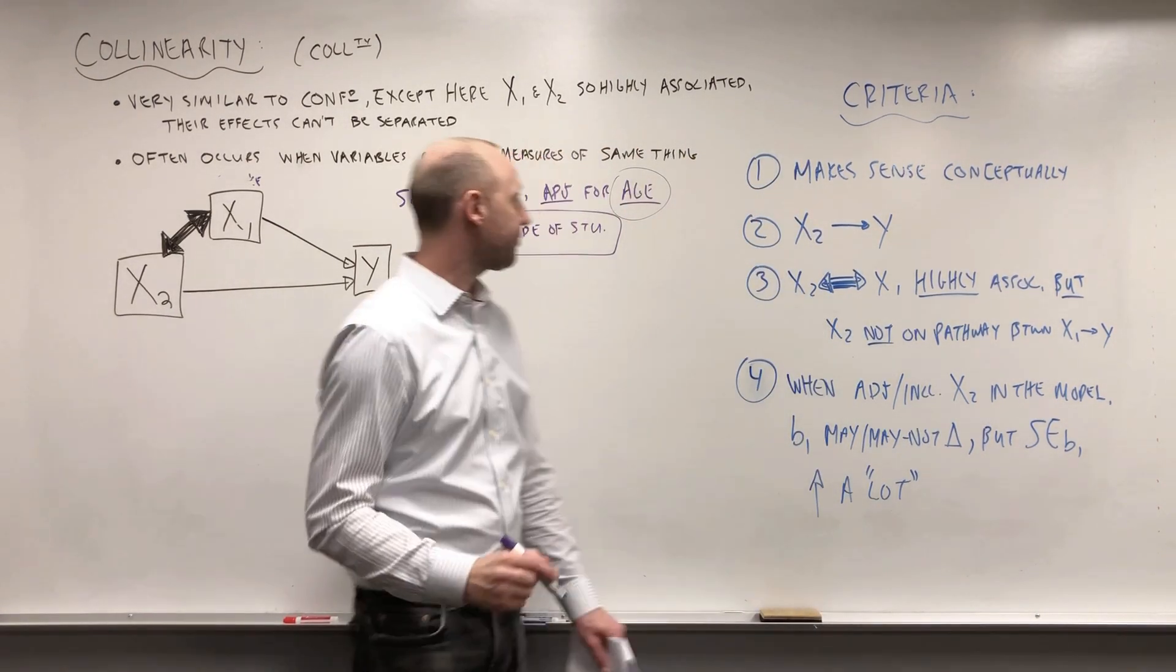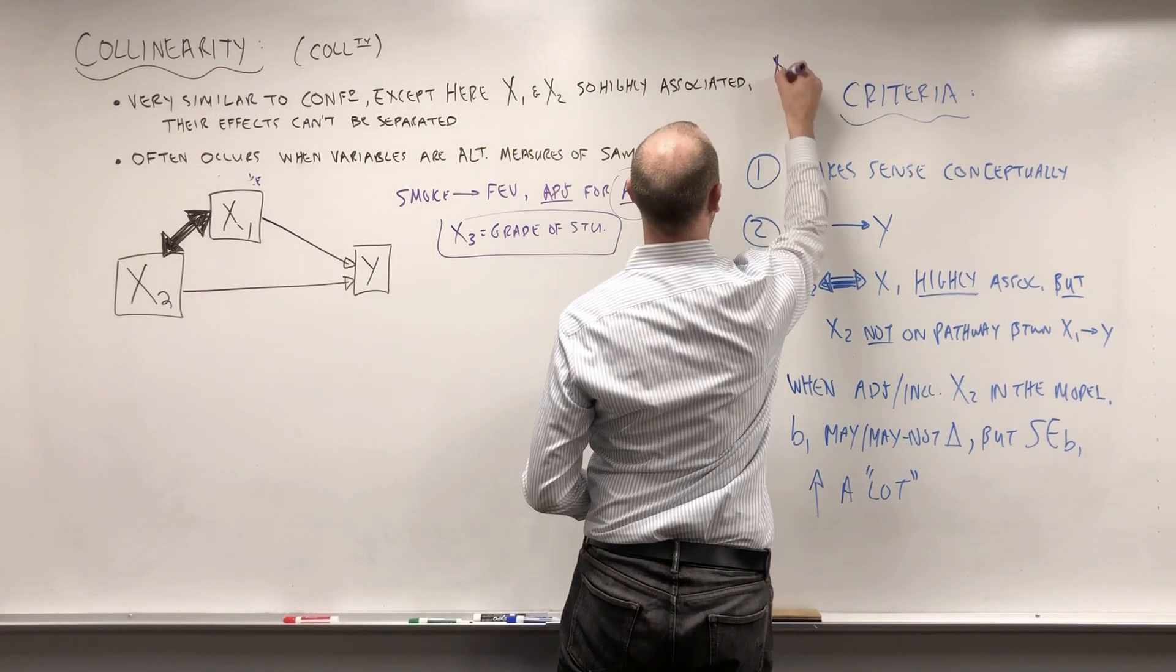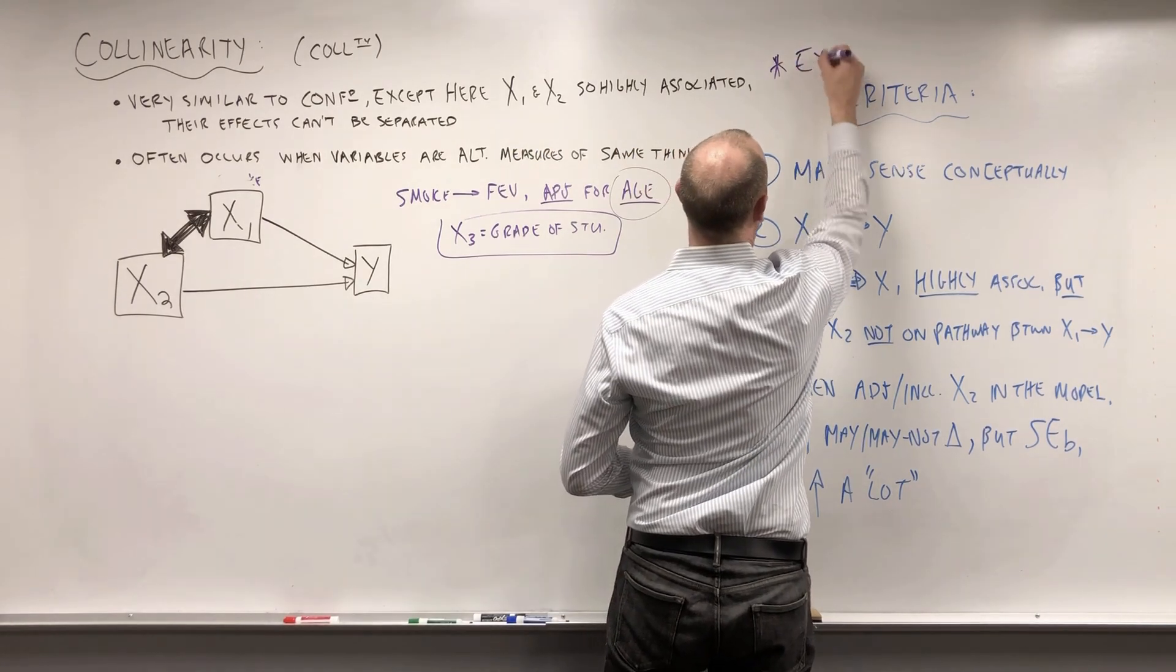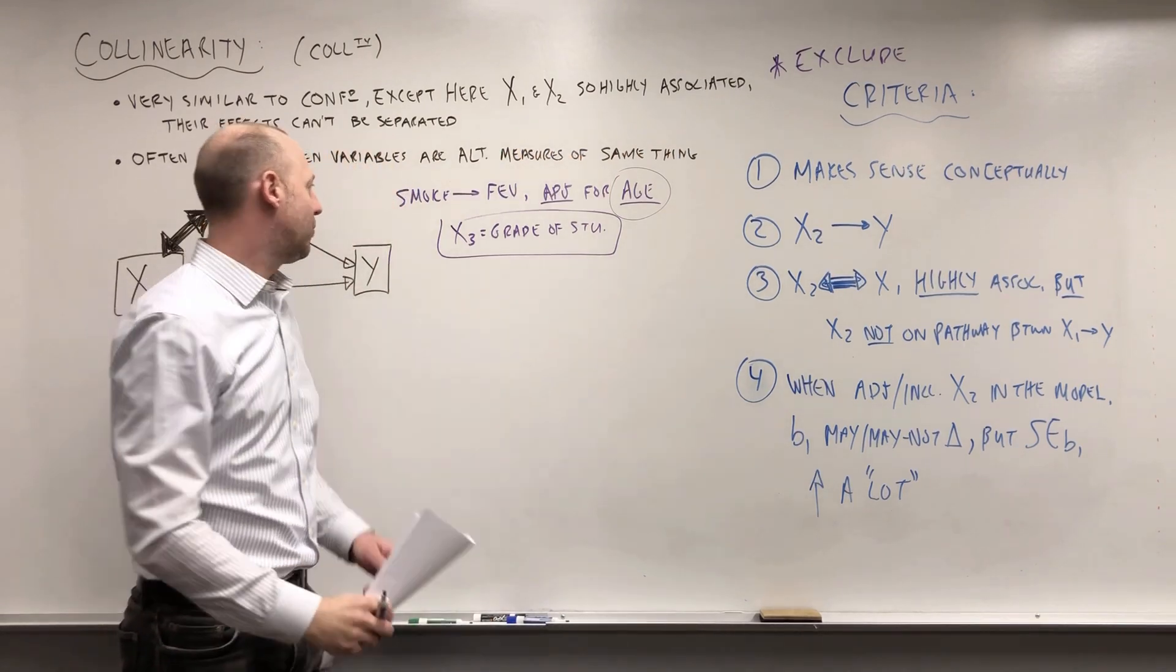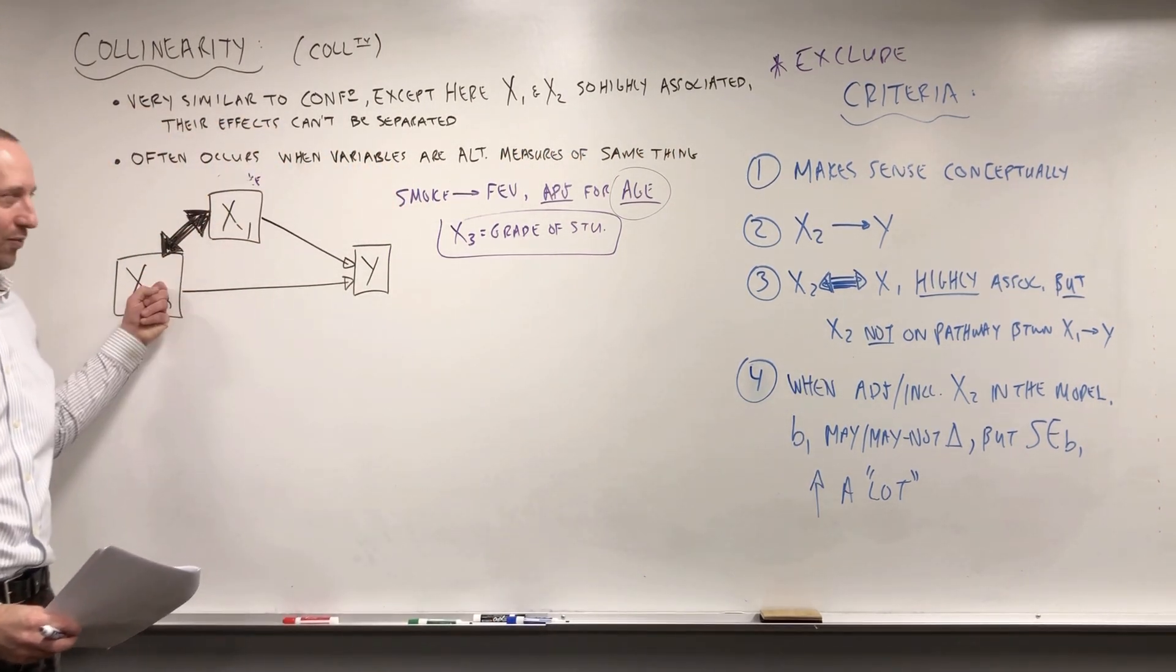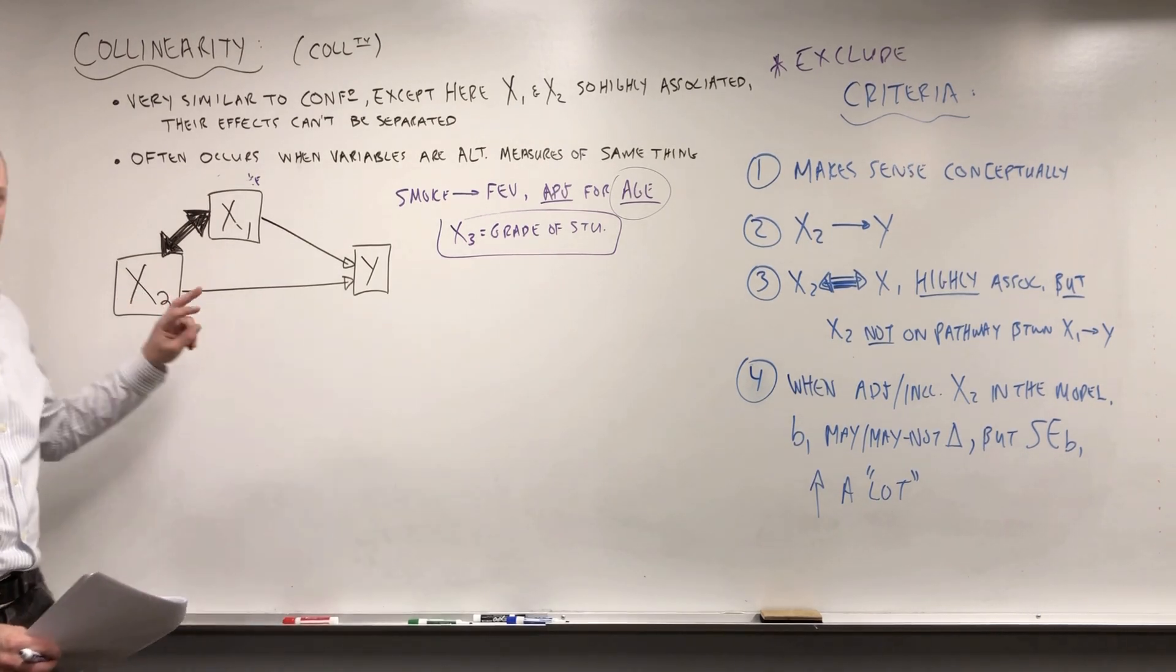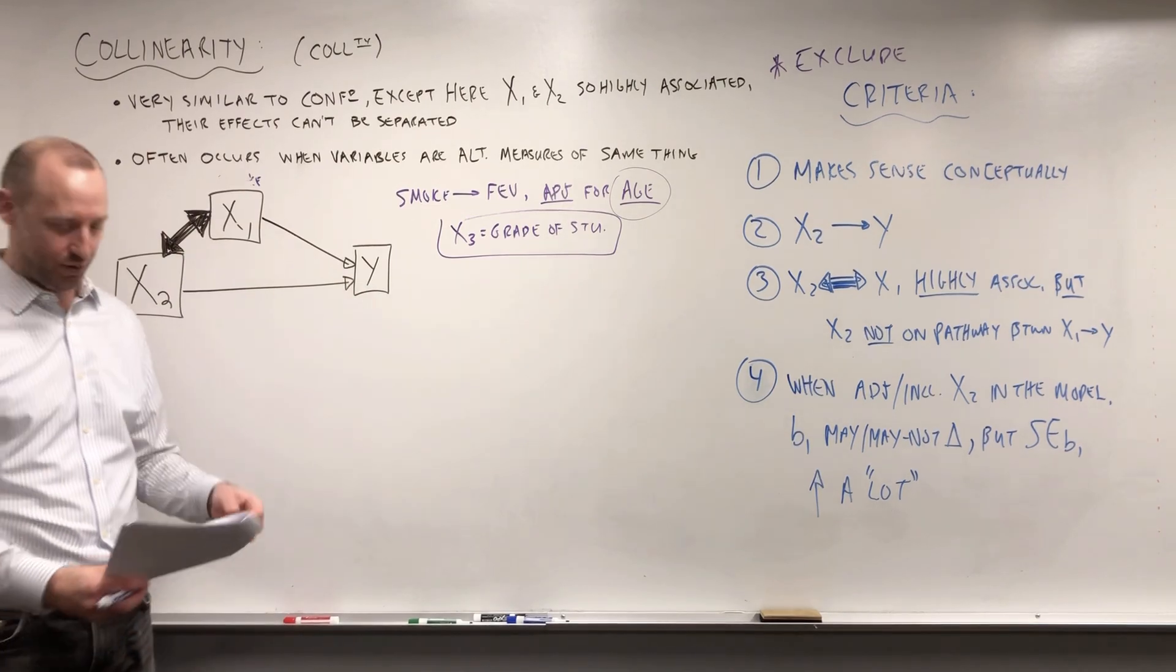We're going to want to exclude them. Whether it's a variable that's collinear with X1, we're going to want to exclude it. If there's two potential confounders that are highly associated with each other, we're going to exclude one of those two.